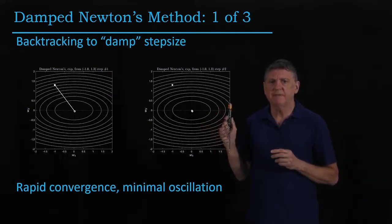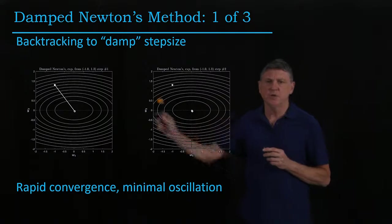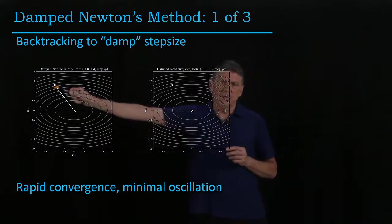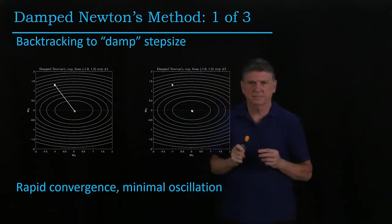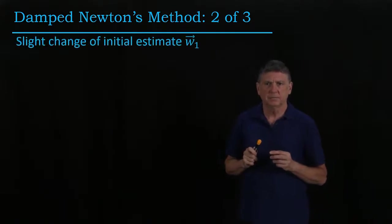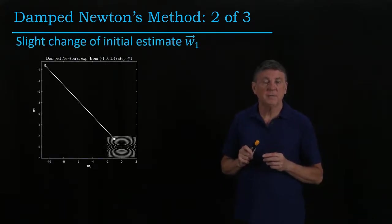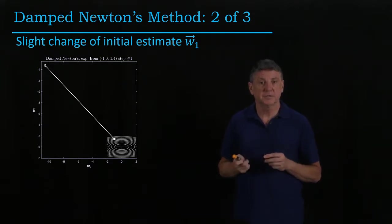Now suppose that we make a very tiny change to the location of that initial estimate. What will happen then? What happens is that it doesn't converge, it diverges.